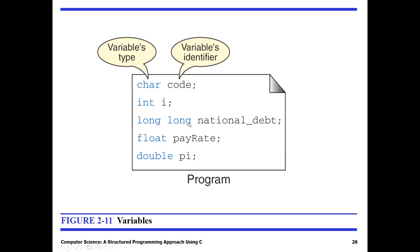Another example is 'long long int national_depth', which is an integer type, so you can assign a whole number value with no decimal part. 'float pay_rate' is declared using the float data type, so you can assign a value with a decimal number. 'double pi' is a variable of data type double, so you can assign a decimal value to pi, like 3.1416.